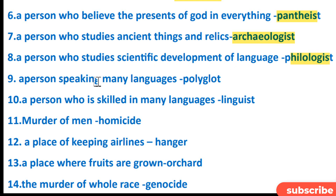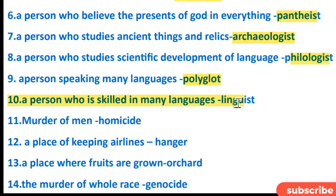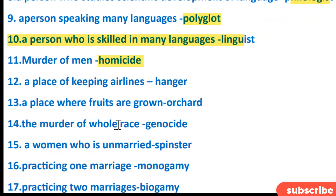A person speaking many languages is a polyglot. A person who is skilled in many languages is a linguist. The murder of a man is homicide. A place for keeping airlines is a hangar.